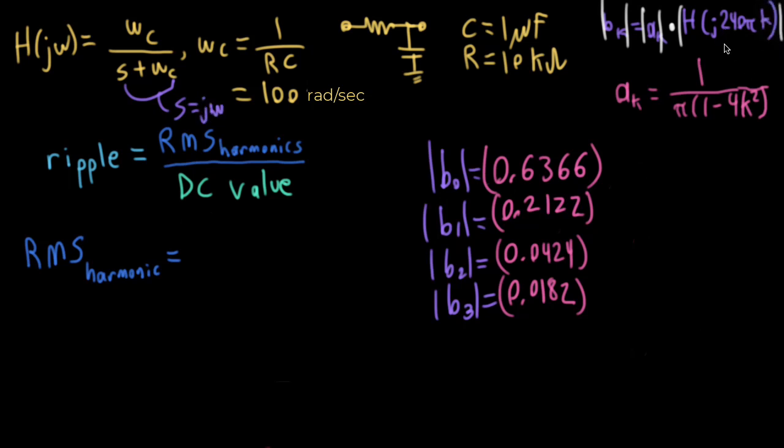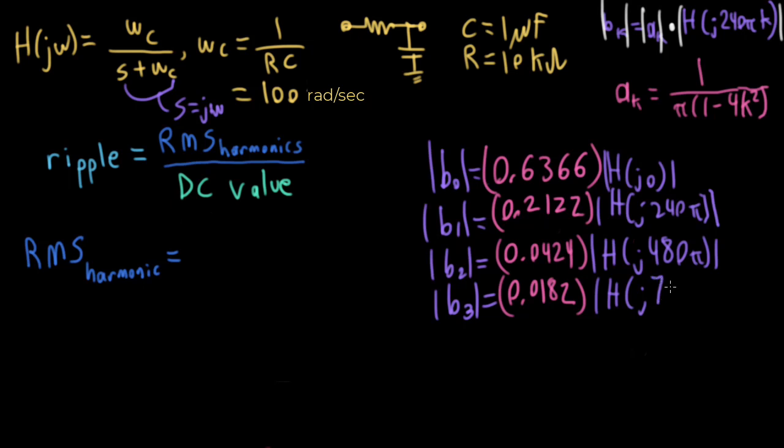So that's H(j0) magnitude, magnitude of big H at j240π, magnitude of big H at j480π, and magnitude of big H at j720π.